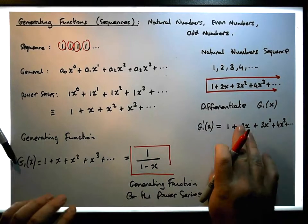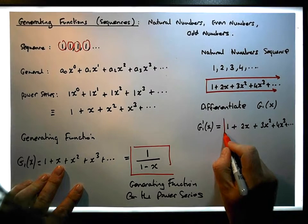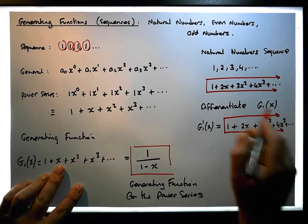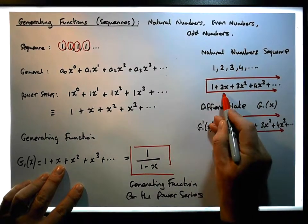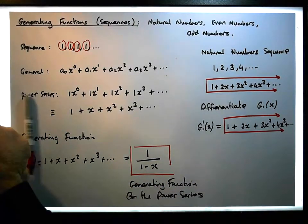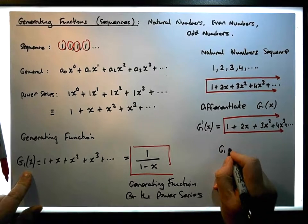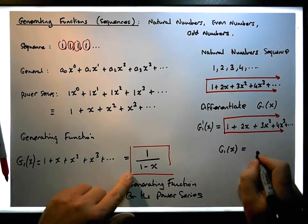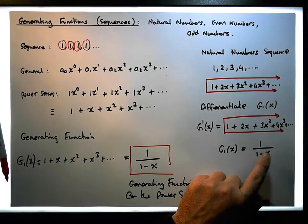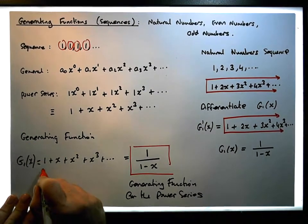By differentiating this base function, we can see we've ended up with the generating power series required for the natural numbers. This is handy because we know that g1 of x is equal to 1 over 1 minus x — that is the generating function for this particular power series.